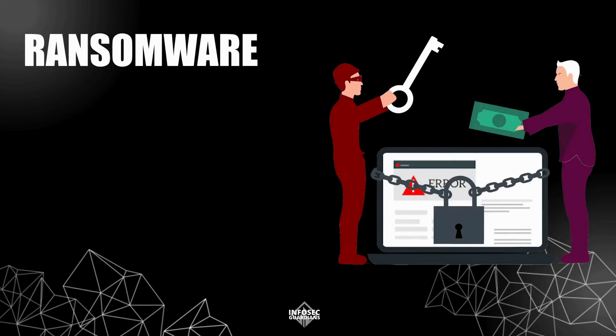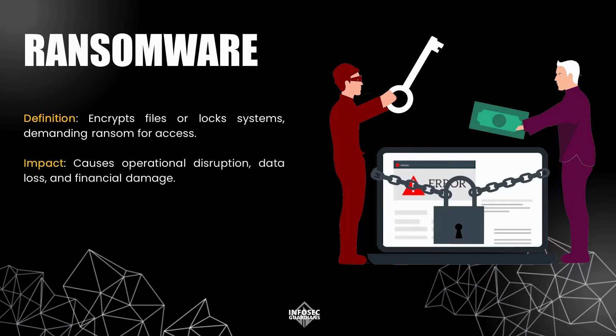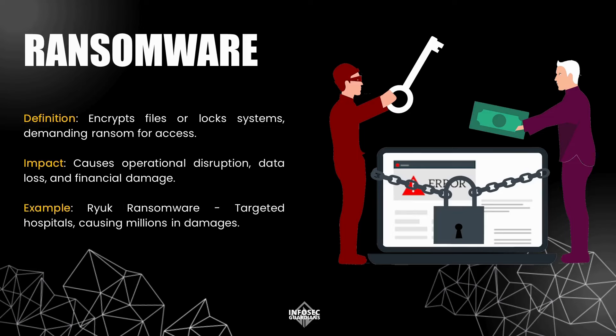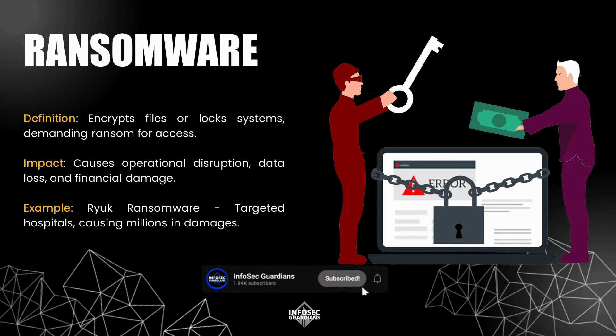Now let's discuss ransomware, a particularly nasty type of malware. Ransomware works by encrypting files or locking users out of their systems, then demanding a ransom to restore access. The impact can be catastrophic, especially for organizations that rely on continuous access to their data and systems. For example, the Ryuk ransomware has targeted hospitals, disrupting critical operations and costing millions of dollars in damages. Ransomware attacks often force organizations into a difficult position: either pay the ransom or lose access to vital data.